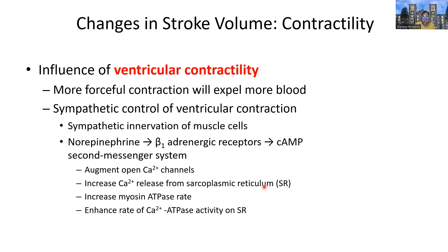The third effect is an increase in the myosin ATPase rate — how fast the cross-bridge cycle is being formed, meaning how fast those contractions are happening. The fourth effect is an increase in the calcium ATPase rate, which helps the cells relax faster by pumping calcium back into the SR. This also helps the cells contract faster, because if the rate of relaxation increases, the rate of contraction likewise increases.